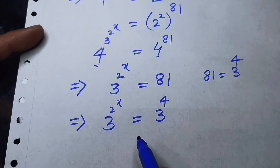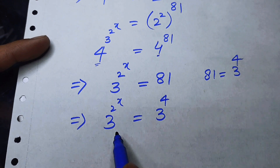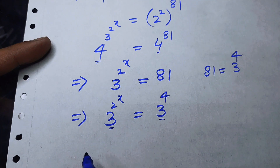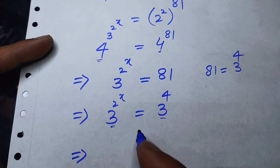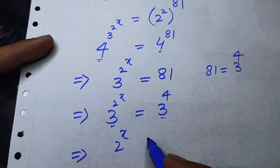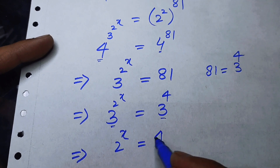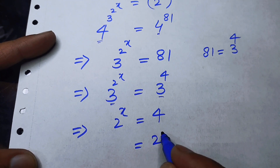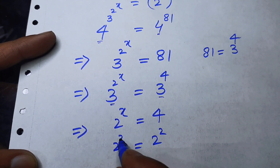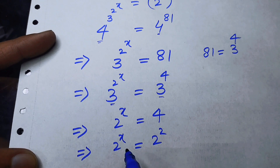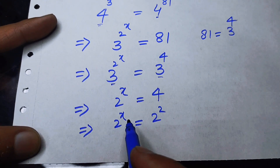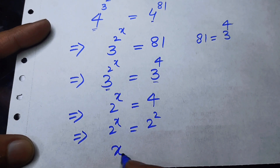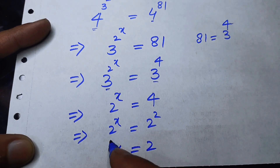Again we compare both sides and note that the bases are the same, so the powers are equal. We can write 2 to the power of x is equal to 4. We also write 4 as 2 squared, and again comparing both sides, the bases are the same, so the powers are equal.